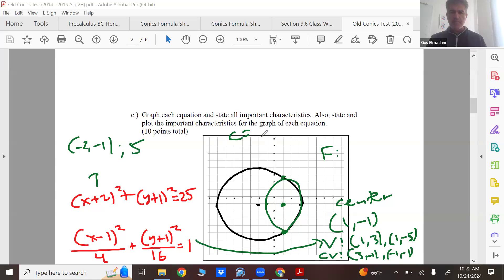Your foci, your c squared, your c is two root three because your c squared is 12. So you go two root three above and below the center. Does that make sense? So I got those for part e.